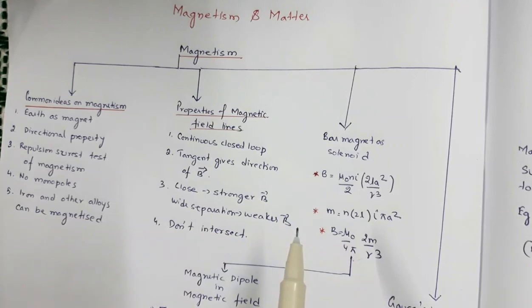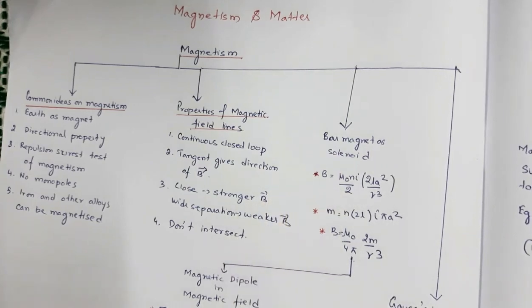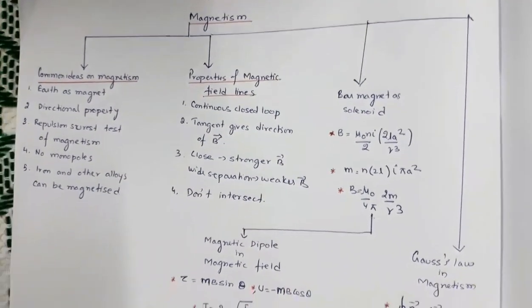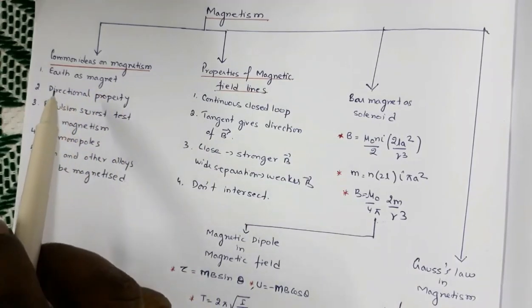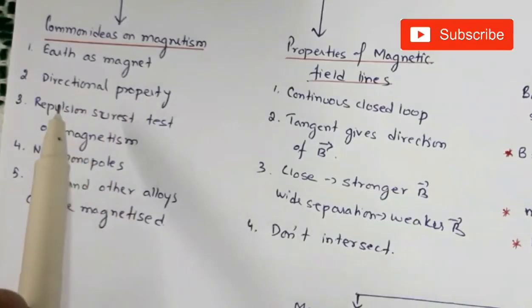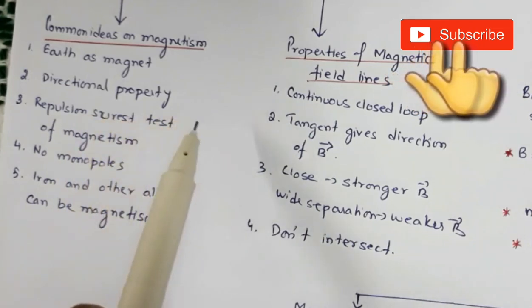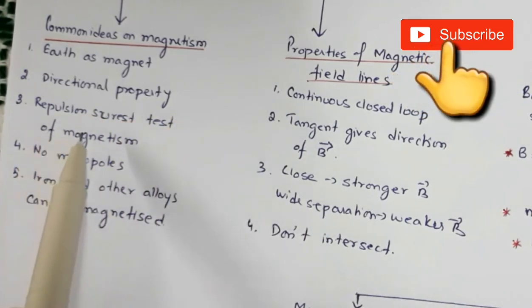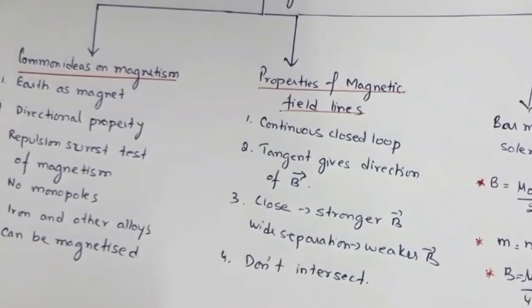In this video, I am going to revise the chapter Magnetism and Matter. The first part of this chapter deals with common ideas on magnetism: Earth behaving as a magnet, the directional property of magnets, repulsion as the surest test of magnetism, magnetic monopoles do not exist, and iron and other alloys can be magnetized.